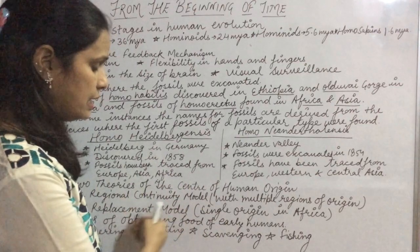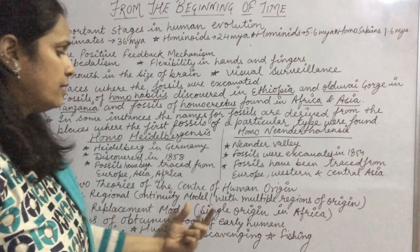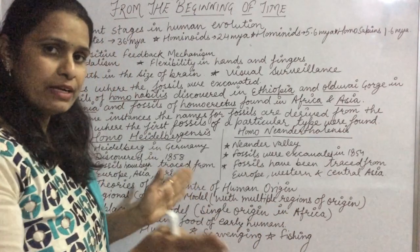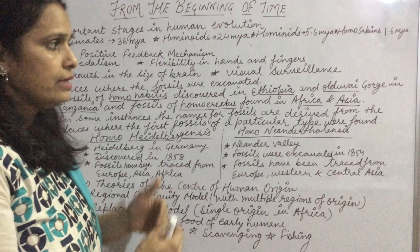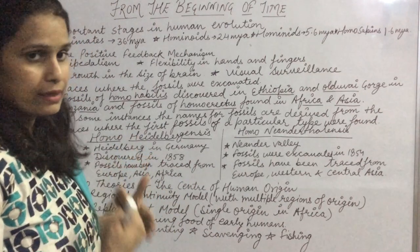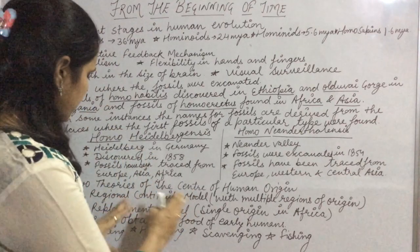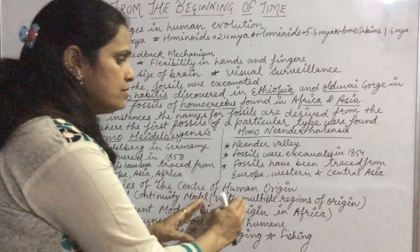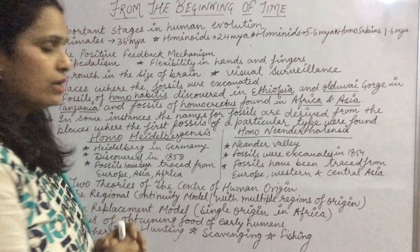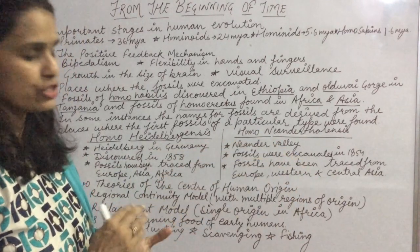The second theory is the replacement model, which proposes a single origin in Africa. Scholars who support this model believe that early human beings originated in Africa and then spread to different parts of the world. This is why the basic anatomy of all humans is the same — two eyes, one nose, two ears, one mouth. Both models offered their own evidence and examples to support their points.